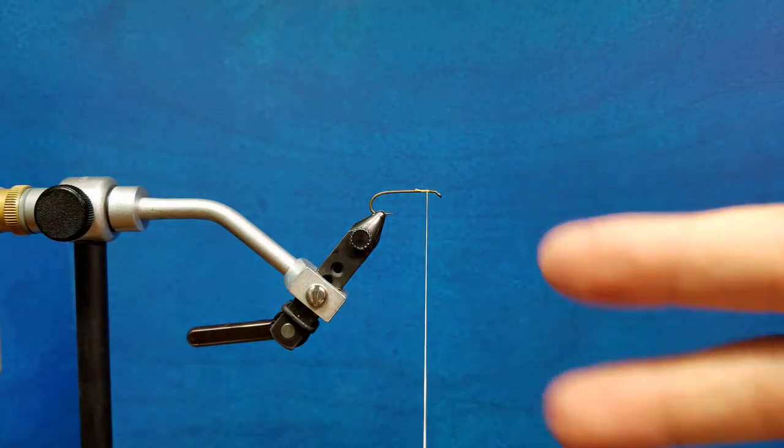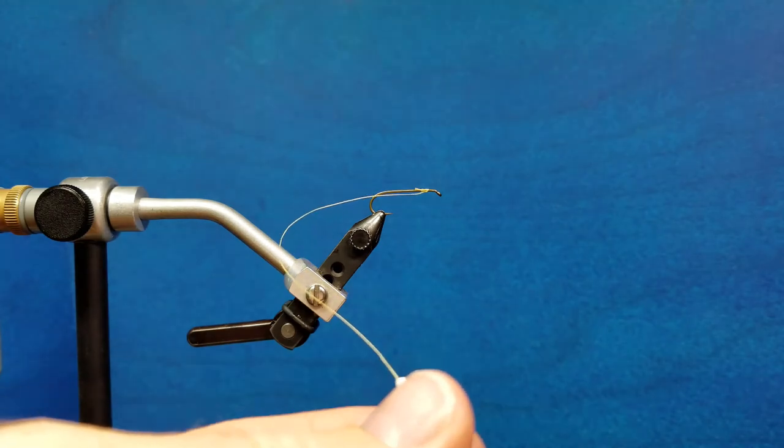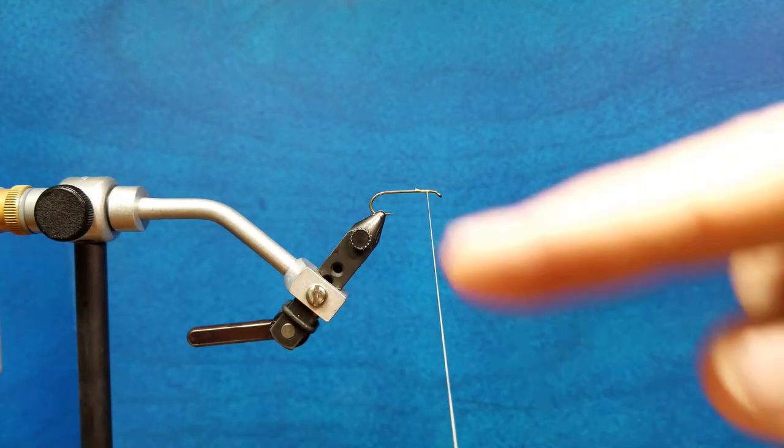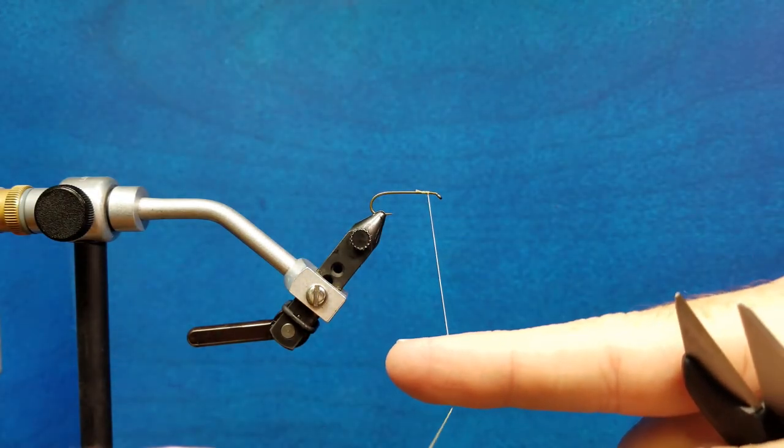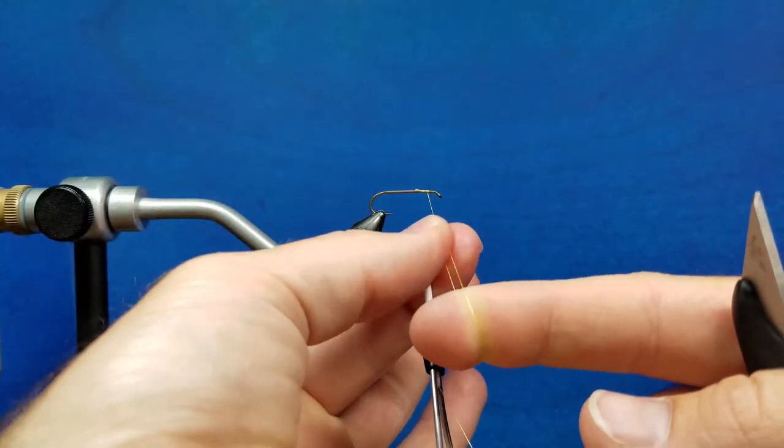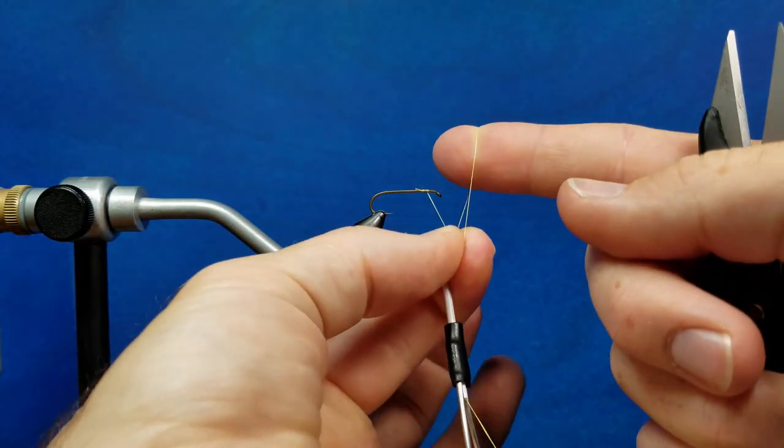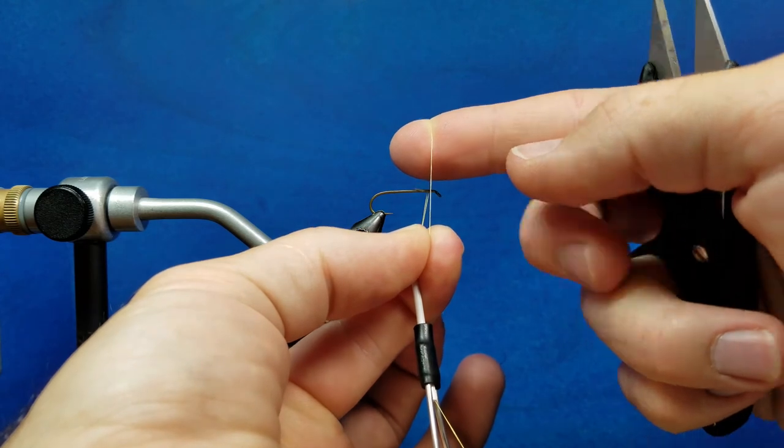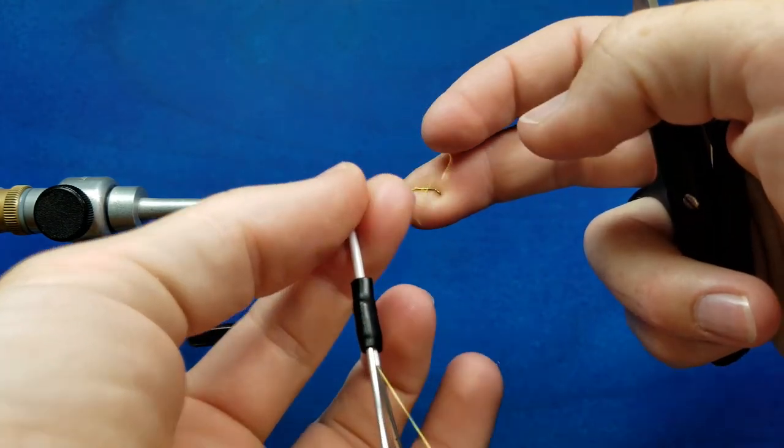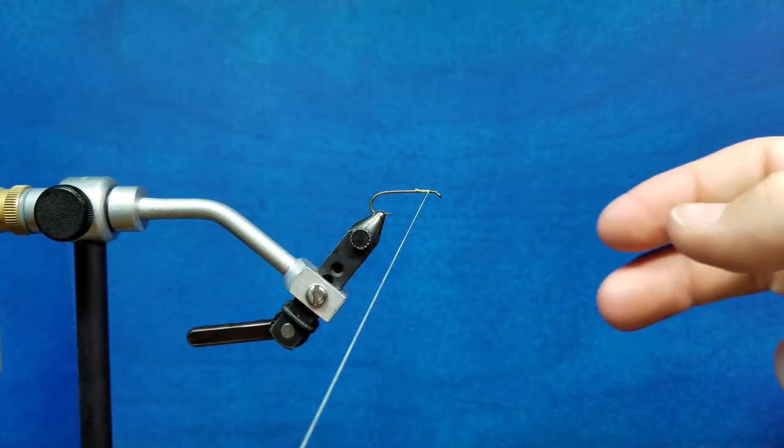So let's review that. Three hops. So I start out with the bobbin in my left hand. I hop once with my right index finger, I hop twice and pinch, three times up and over, trap it with my middle finger and cinch it down. That's the half hitch.